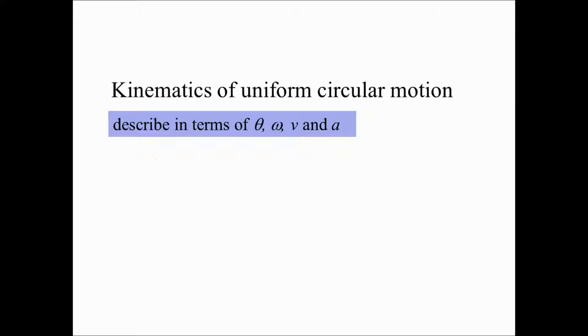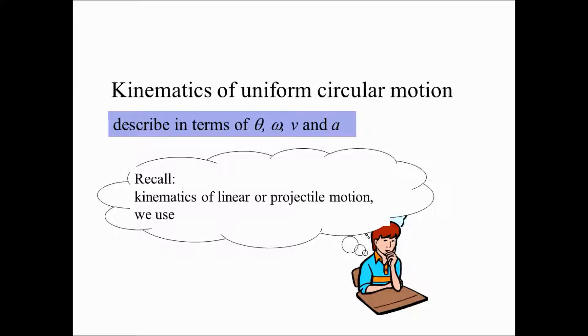Comparing uniform circular motion and that of linear or projectile motion. So in projectile motion, we use V, U, A, S, T to describe the motion, but in uniform circular motion, we usually describe in terms of theta, omega, V and A.